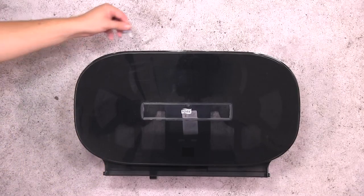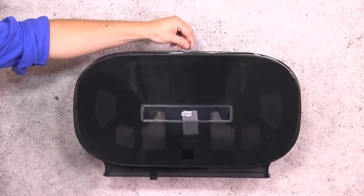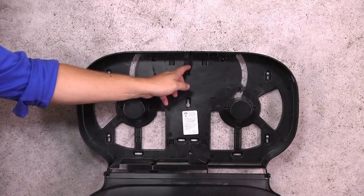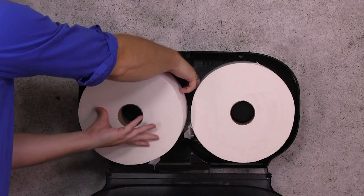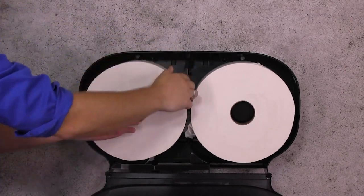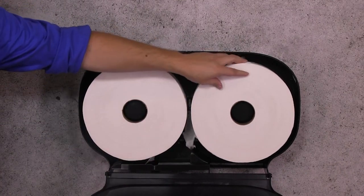Insert the key and turn it to open the cover. Push down the lever to raise the small rollers and load two Tork Jumbo Bath Tissue Rolls onto the supports. Release the lever.